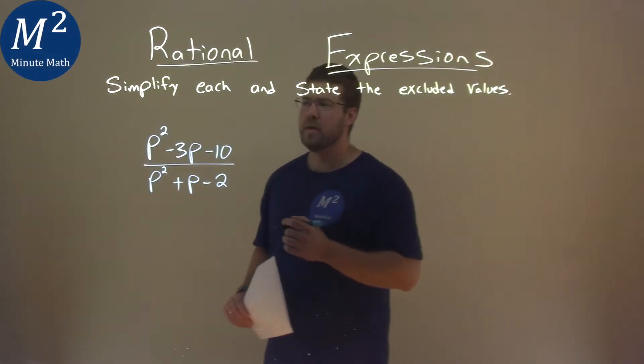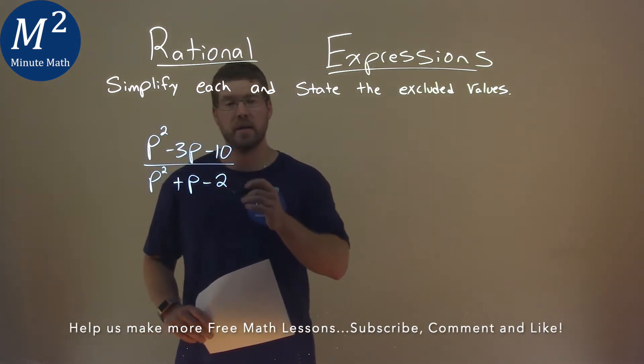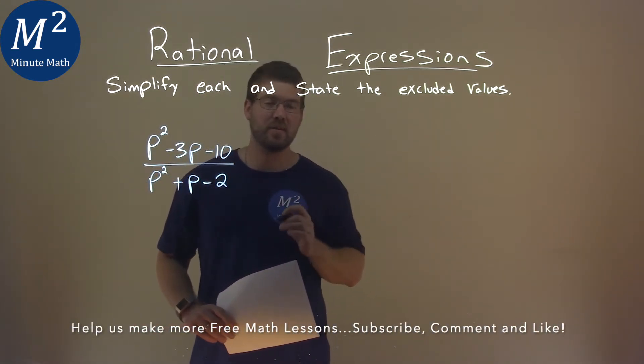We're given this problem right here, p squared minus 3p minus 10 over p squared plus p minus 2, and we need to simplify and state the excluded value.